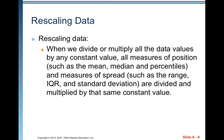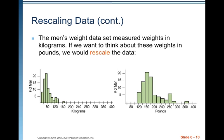Rescaling data is a different situation. When we divide or multiply all the data values by any constant, all measures of position — such as mean, median, and percentiles — and measures of spread — such as range, IQR, and standard deviation — are divided or multiplied by that same constant. If you doubled everyone's height, not only would the mean increase but also the variability; the difference between the shortest and tallest person would be magnified. The men's weight data, originally in kilograms, can be rescaled to pounds by multiplying by a conversion factor.